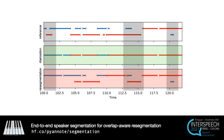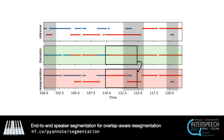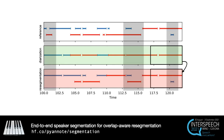We use this property to perform overlap-aware resegmentation of various speaker diarization baselines. In this example, the green row depicts the output of the state-of-the-art VBx speaker diarization system developed at Brno University, hosting this Interspeech conference. For each position of the sliding window, we find the optimal mapping between speakers of the original diarization and the local speaker diarization provided by the model, and locally replace the former by the permutation of the latter.